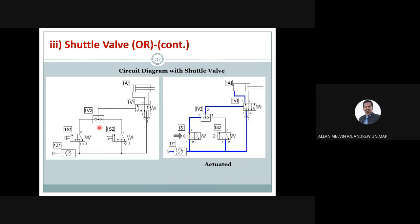Here is a simple circuit: starting from the compressor, you have a push button and a shuttle valve. You have push button one and push button two. If you press push button one it will activate; if you press push button two it will activate. The signal goes through to the 5/2 directional control valve to activate the cylinder.